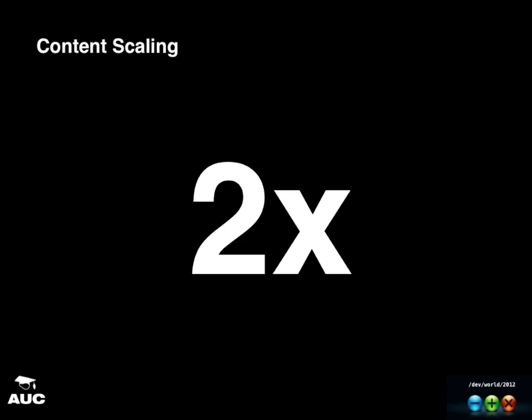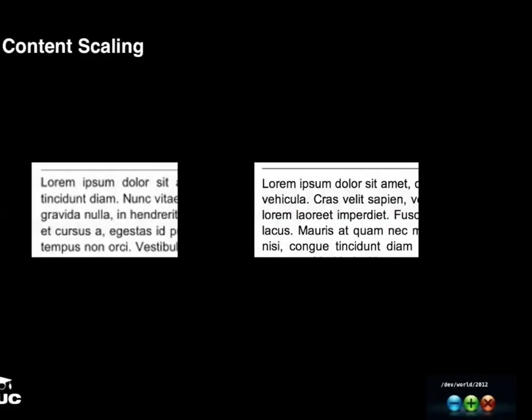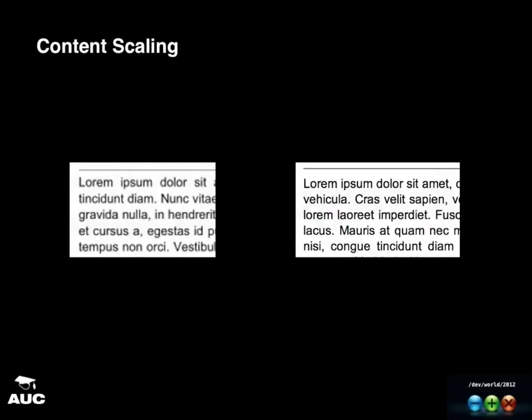What actually happens is the content is also scaled up by 2x. The pixel density is doubled and the content size is doubled, so physically content is still the same size on screen — but now there are more pixels to define it, so everything becomes a lot sharper and more legible. Depending on the device, if it's over 300 DPI it's actually crisper than printing on paper. With IPS displays you can look at it from the side and it looks almost like paper.